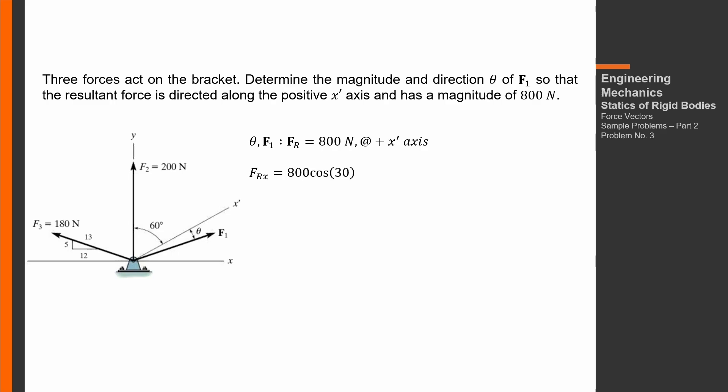So, the x-component of the resultant force, based on the given, is 800 cosine 30. The 30 comes from 90 minus 60 degrees because the resultant force is along the x' axis. Then FRy equals 800 sine 30.